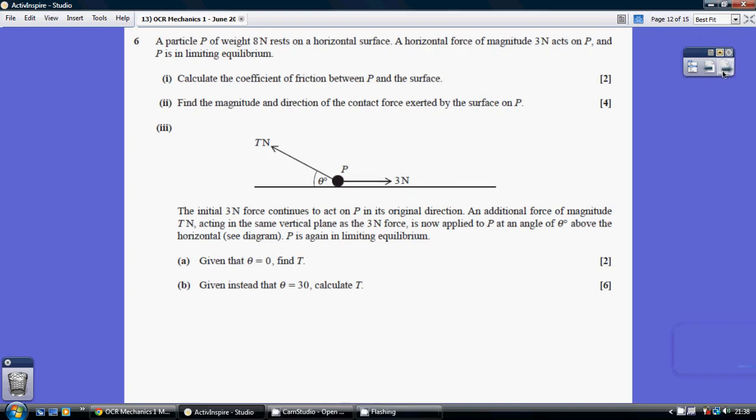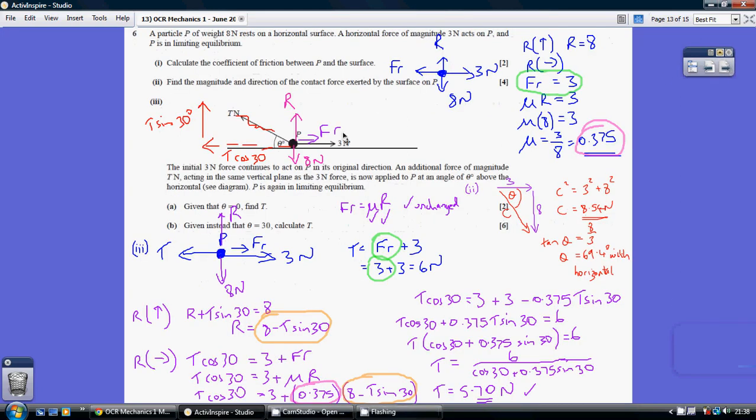Question 6. For part 1, calculate the coefficient of friction between P and the surface. This diagram summarizes the forces. Resolving vertically, we get R being 8. Resolving horizontally, we get the friction equaling 3.